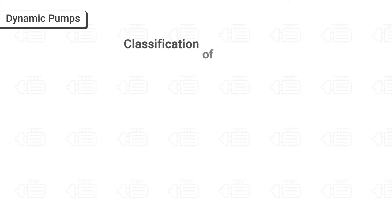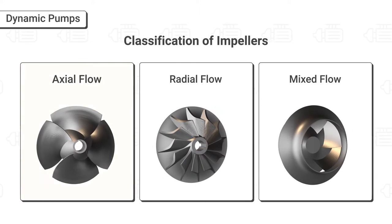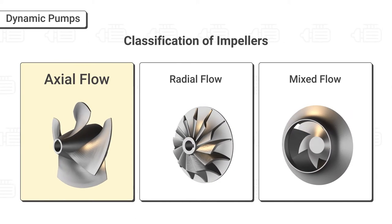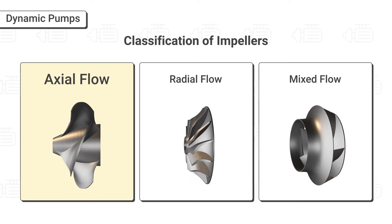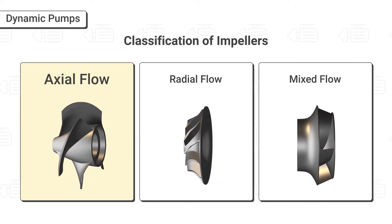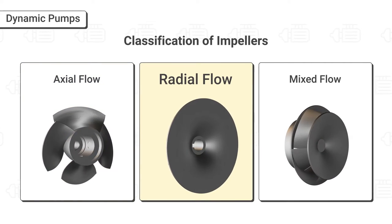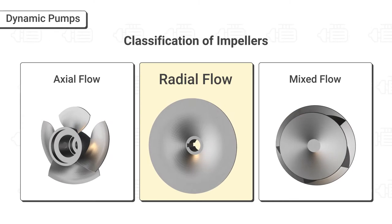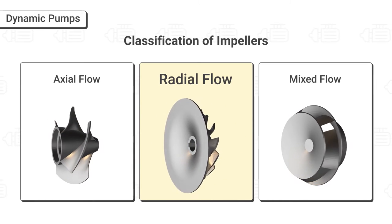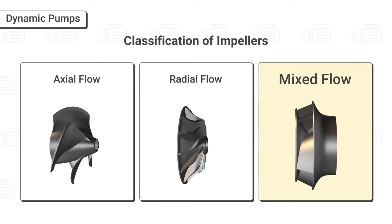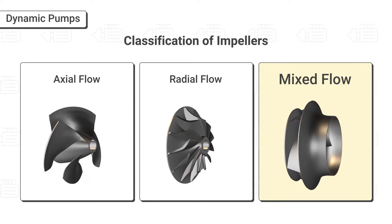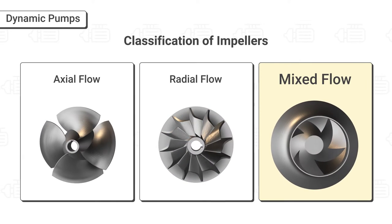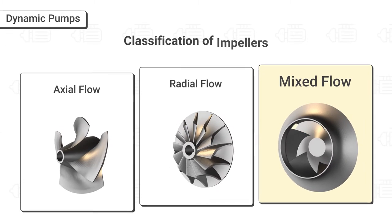We can classify impellers into three designs. Axial flow: the axial flow impeller discharges fluid along the shaft axis. Radial flow: the radial flow impeller discharges the fluid radially at 90 degrees to the shaft axis. Mixed flow: the mixed flow impeller discharges fluid in a conical direction using a combined radial and axial pumping action.